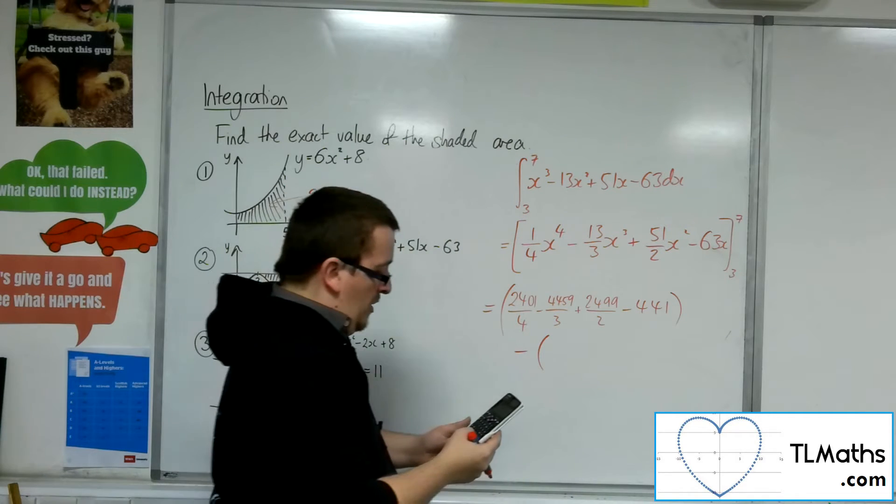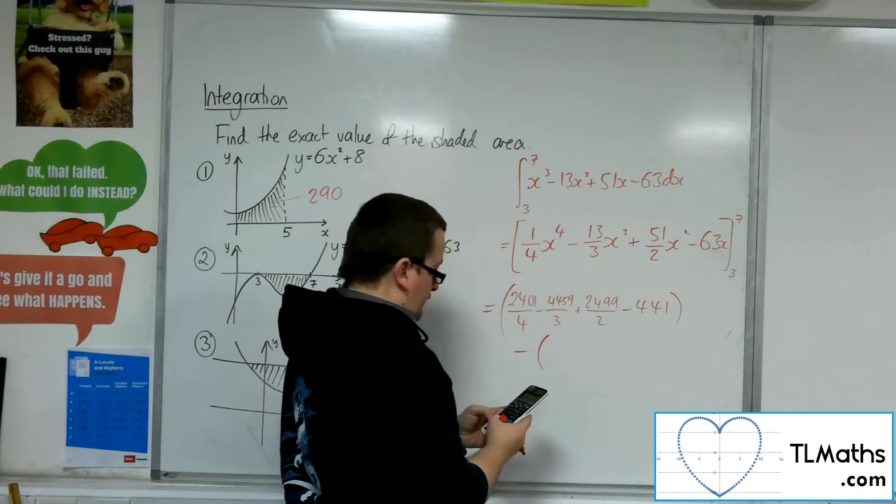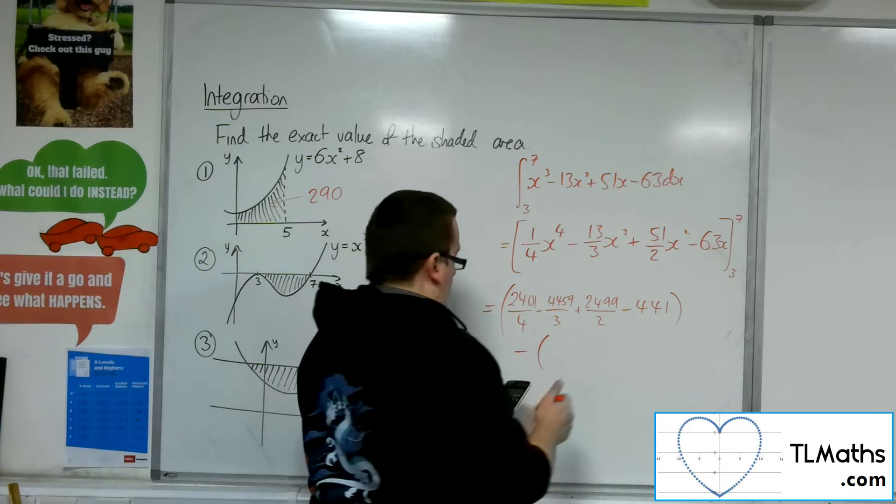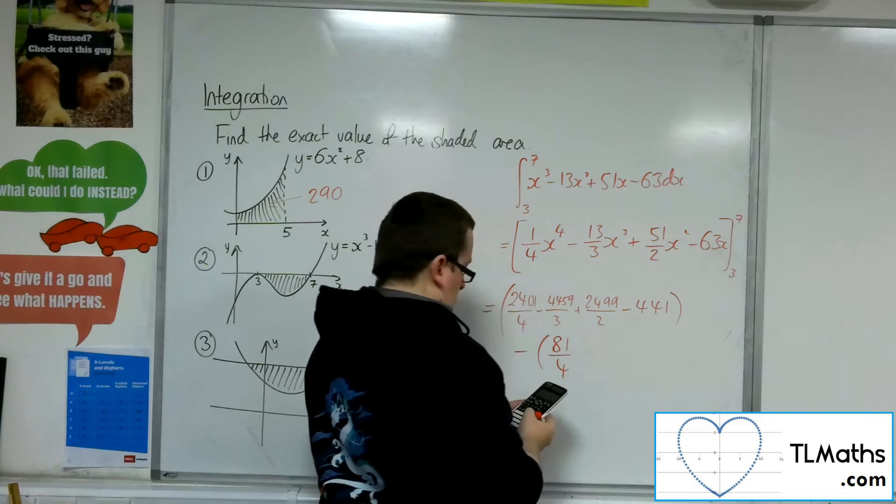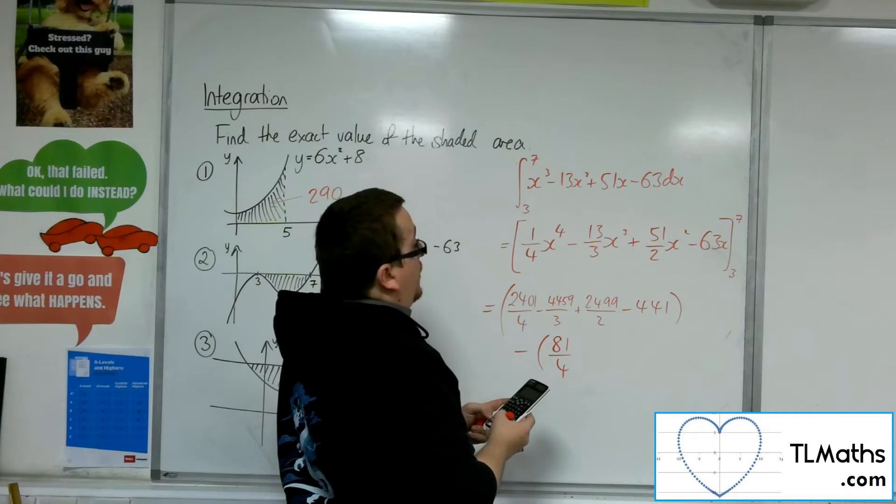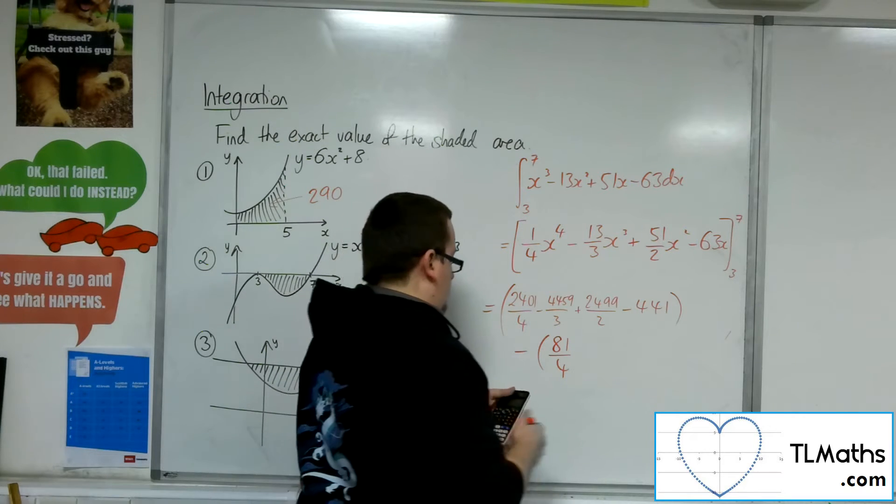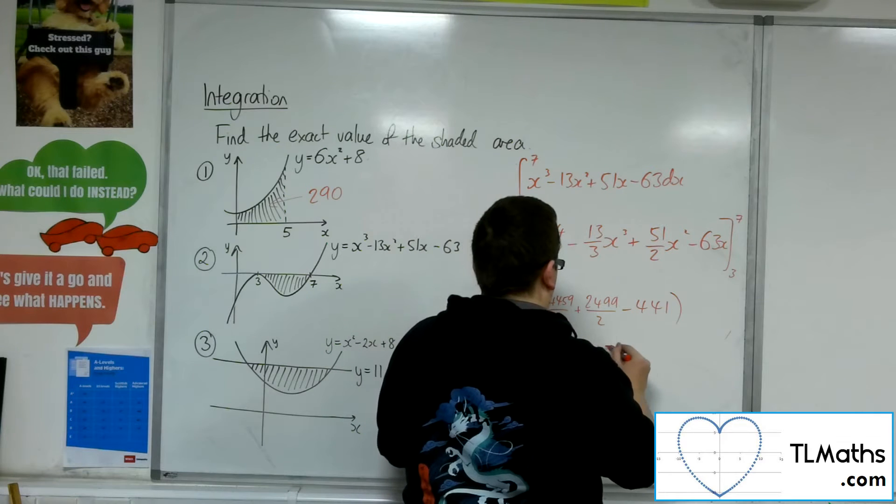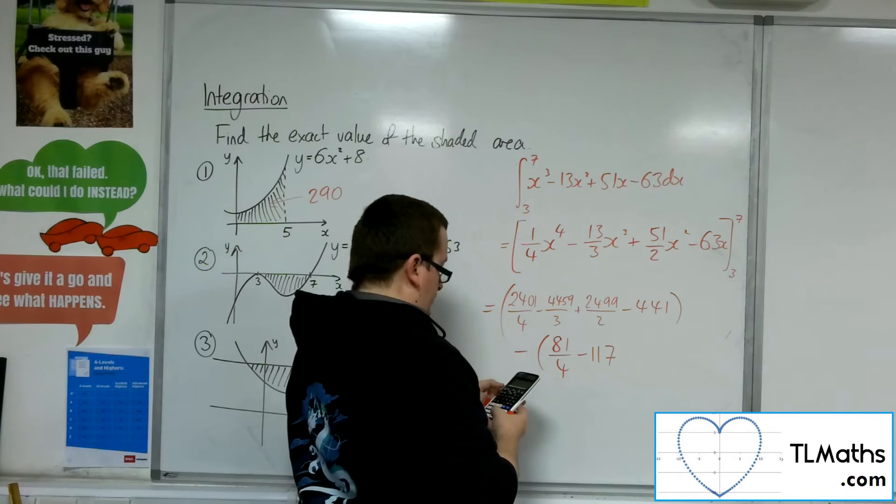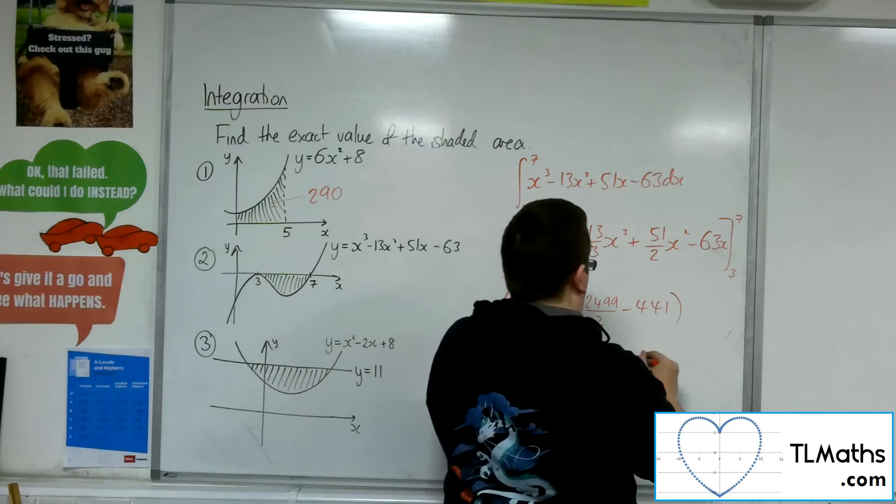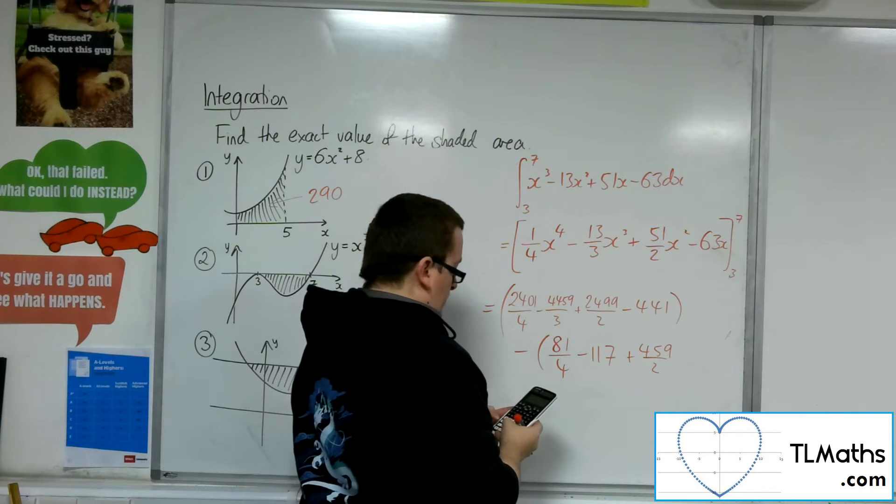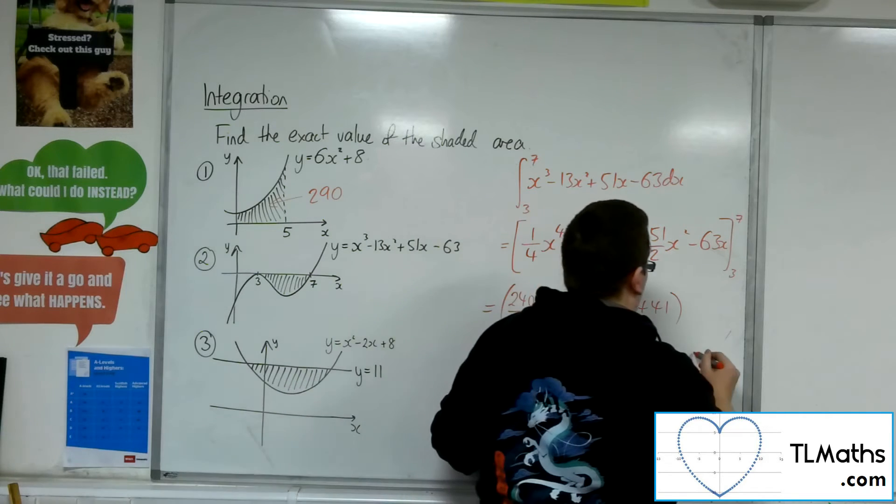Now substituting in the 3, so we've got 1 quarter times by 3 to the power of 4, so 81 quarters. Take away 13 thirds times by 3 cubed, so 117. Then we've got 51 halves times by 3 squared, so that's 459 over 2. And then we've got 63 times by 3, so take away 189.